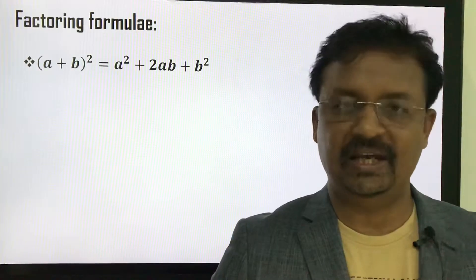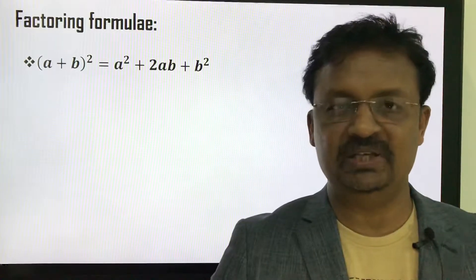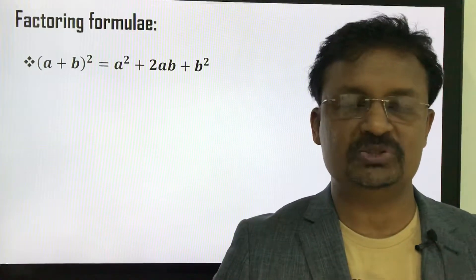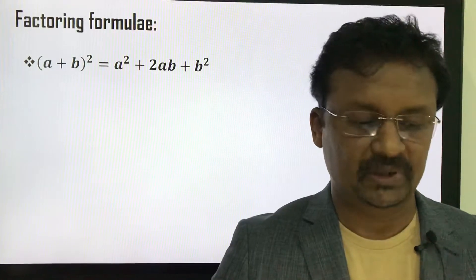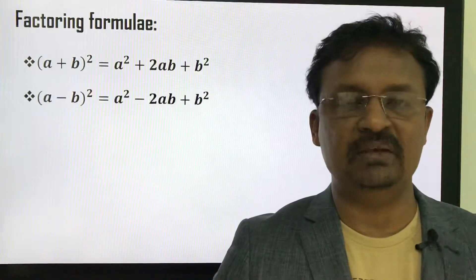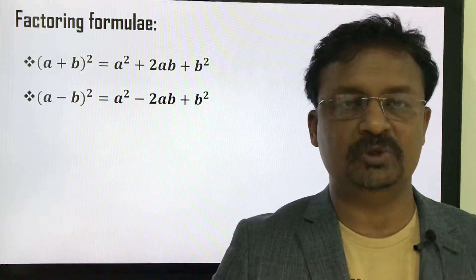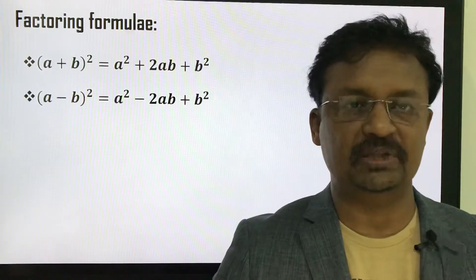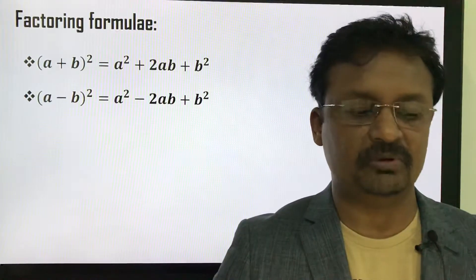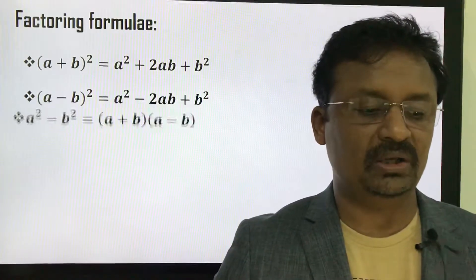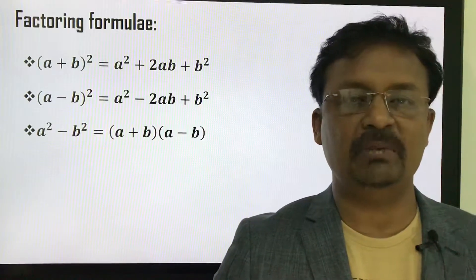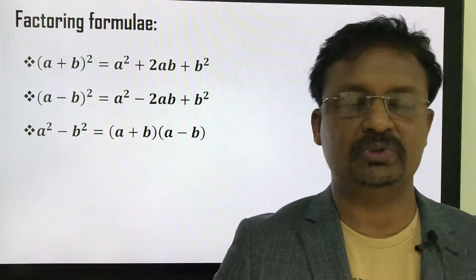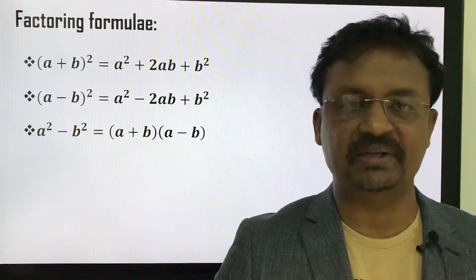The first formula: (a + b)² = a² + 2ab + b². Number 2: (a - b)² = a² - 2ab + b². Number 3: a² - b² = (a + b)(a - b).